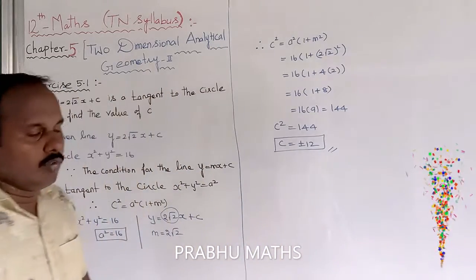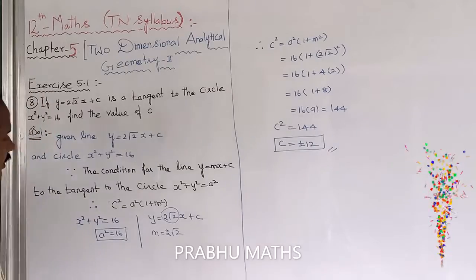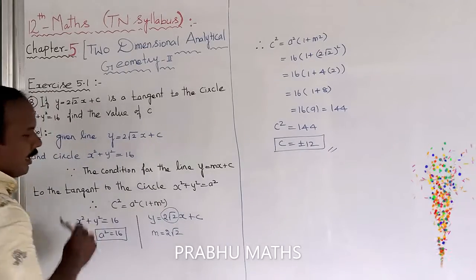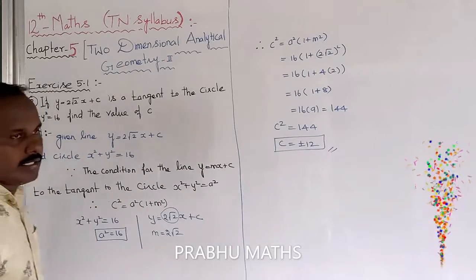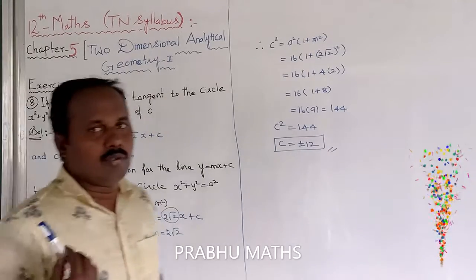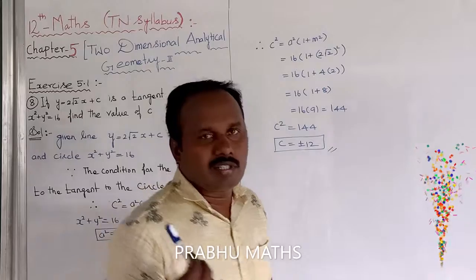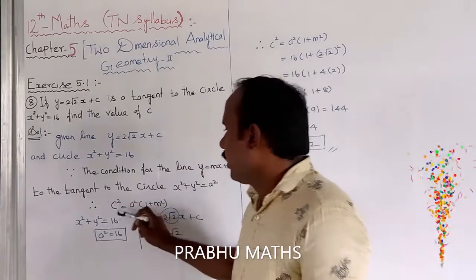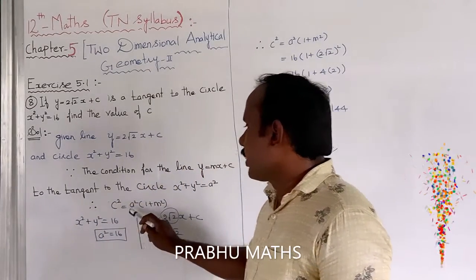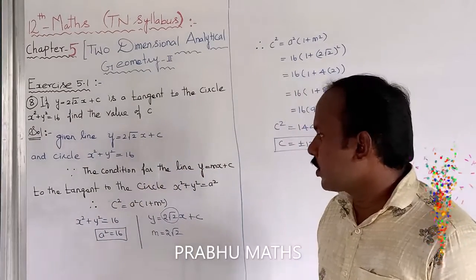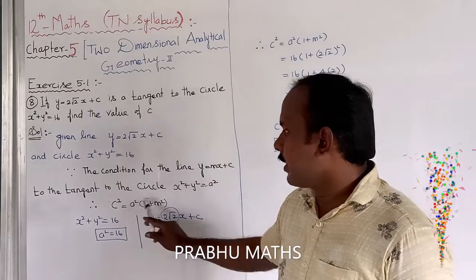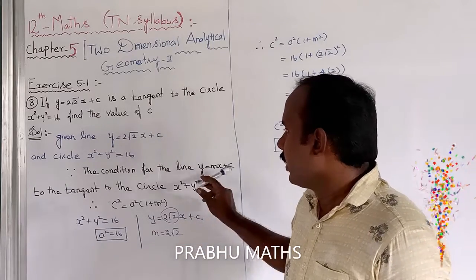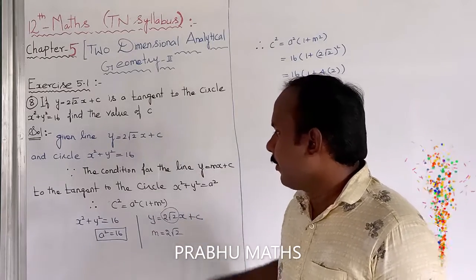That's the complete solution. The key point is knowing the tangency condition: c² = a²(1 + m²), where a² comes from the circle equation and m is the slope of the given line.